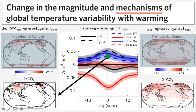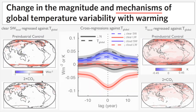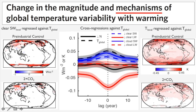Looking at where that decrease occurred spatially, in the 2xCO2 case the positive contribution from the Southern Ocean and Arctic Ocean has essentially been lost. Once the climate has warmed from pre-industrial to 2xCO2 boundary conditions, the sea ice has melted away and can no longer vary and can no longer act as a positive radiative contribution to unforced global temperature variability.